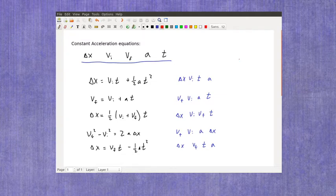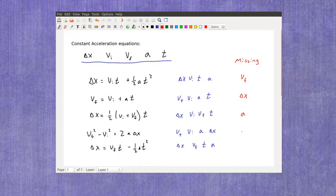So the next thing I want you to notice is that each one of these equations is missing one of the possible five variables. The top one is missing the final velocity. The next one is missing the displacement. This one is missing the acceleration. The next one down is missing the time. And the last one is missing the initial velocity.